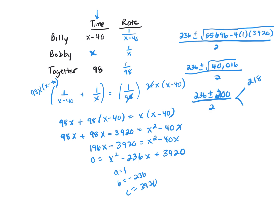And then 236 minus 200, divided by 2, is 18. And that's not going to work, because if you look at X minus 40, 18 minus 40 would give you a negative number, so your answer's got to be 218.